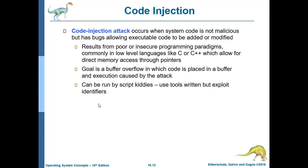A code injection attack occurs when system code is not malicious but has bugs allowing executable code to be added or modified. It results from poor or insecure programming paradigms, commonly in low-level languages like C or C++ which allow direct memory access through pointers.